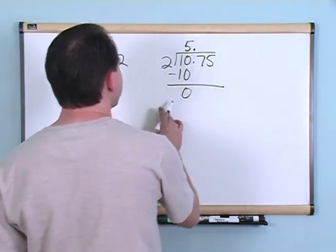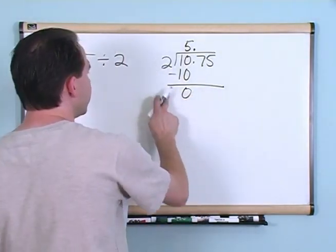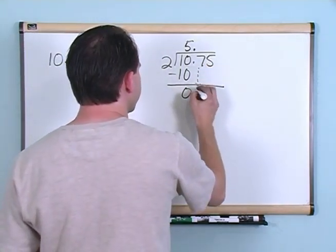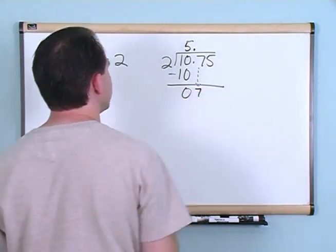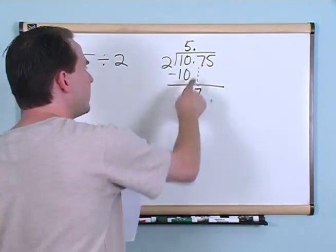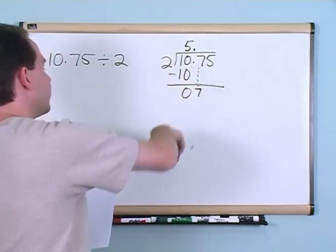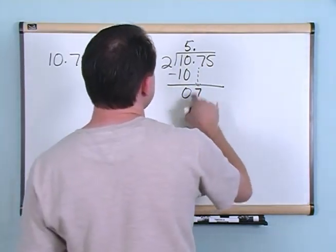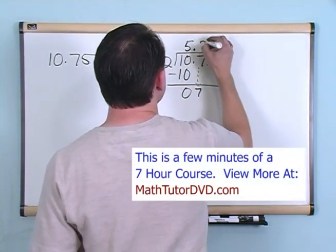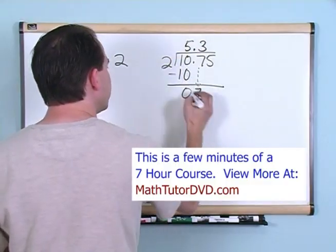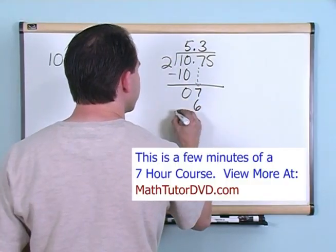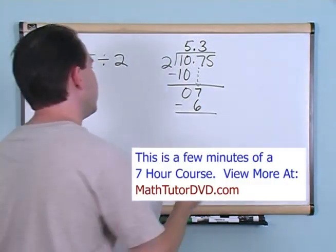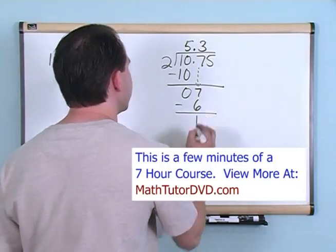You're going to get a 0 here, and you ask can 2 go into 0? No it can't. But I go ahead and drag my 7 down. Notice I'm not doing anything with the decimal under here. Can 2 go into 7? Yes it can, 3 times, because 3 times 2 is going to give me 6. And again I subtract, and I bring a 1 down.